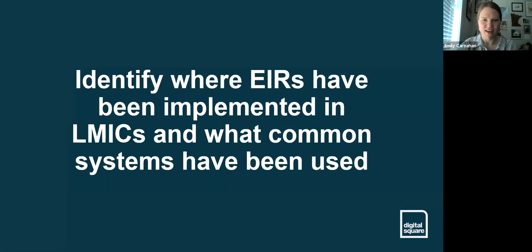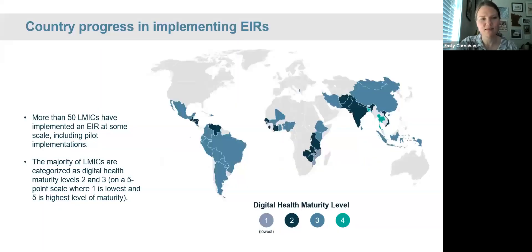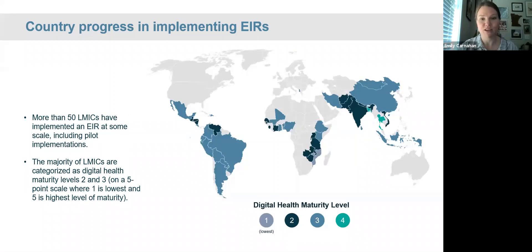Our first aim was to identify where EIRs have been implemented in LMICs and what common systems have been used. Many countries in Latin America and Asia, and an increasing number in Africa, are planning, piloting, or scaling EIRs. Based on our document review, we found that more than 50 LMICs have implemented an EIR at some scale, including pilot implementations. This map shows countries that have implemented an EIR at any scale — including pilots and subnational implementations. High-income countries are not reflected as they were not part of our review.